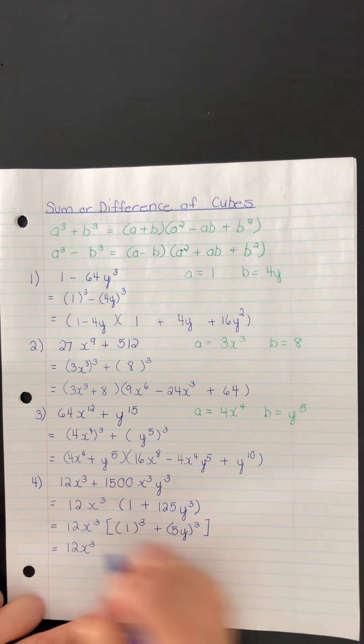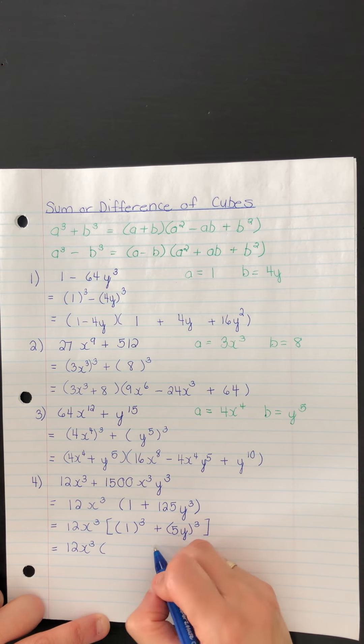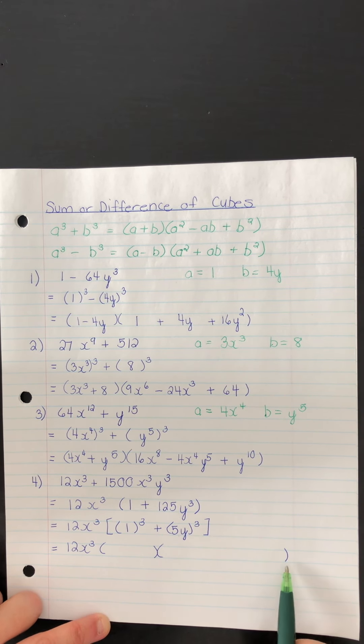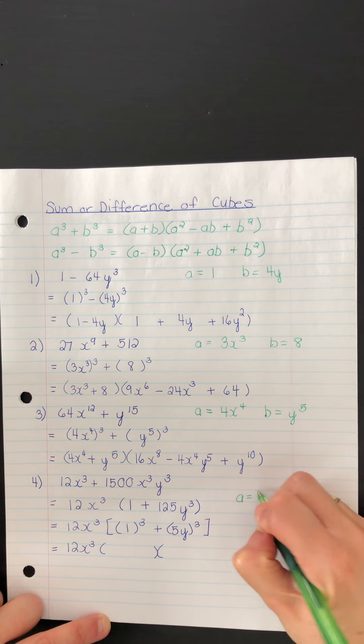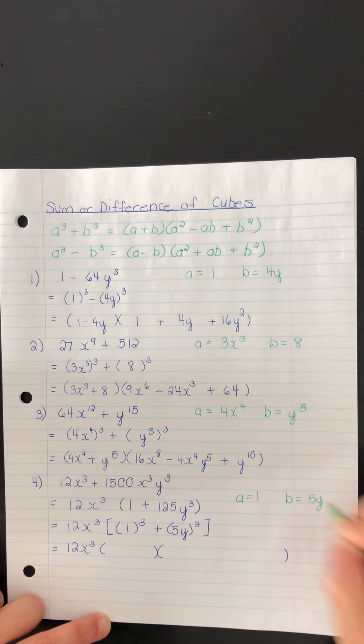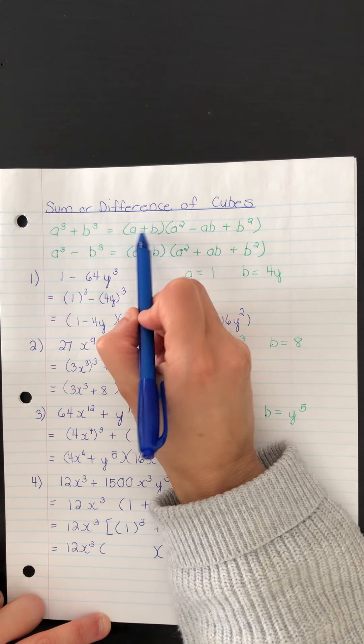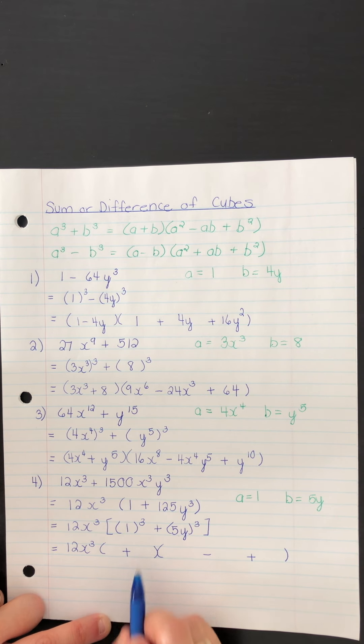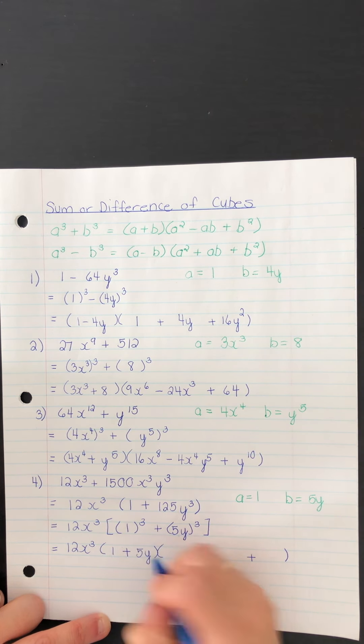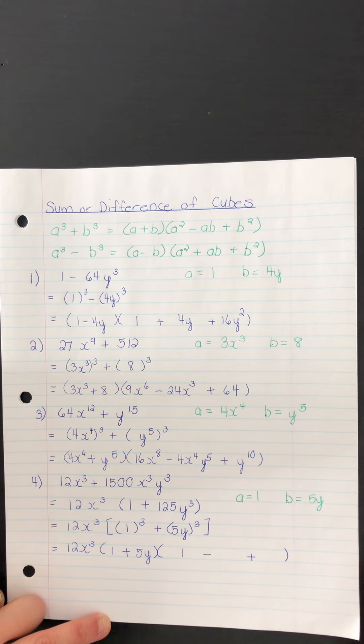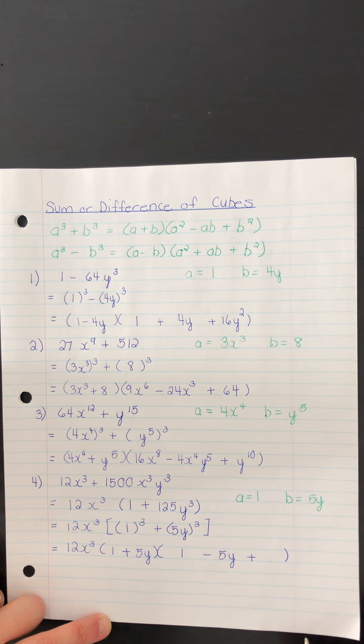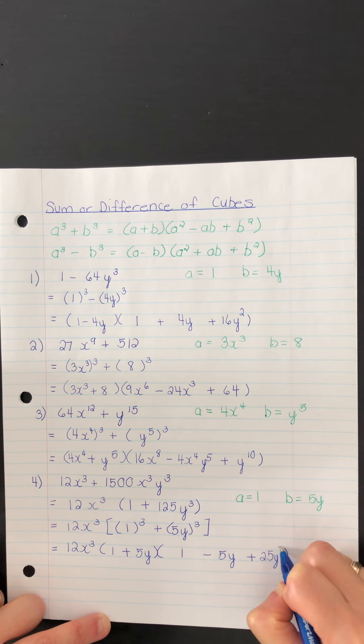So after 12x cubed, we can use the sum of cubes formula, which means we'll have a binomial there and then a trinomial here. And to fill this in, we're going to use a is 1 and b is 5y. The formula for sum of cubes has a plus sign here, here minus, here plus. So I need a plus b. So 1 plus 5y. I need a squared. 1 squared is 1. Here we should have a times b. So 1 times 5y. And in this last spot, the square of b. Square 5 and square y to get 25y squared.